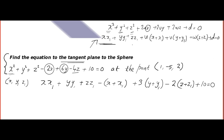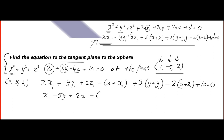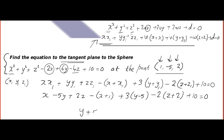Now, what is (x1, y1, z1)? It is (1, −5, 2). So substituting: x·1 + y·(−5) + 2·z − (x + 1) + 3(y − 5) − 2(z + 2) + 10 = 0. You can simplify. The answer comes out to y + 5 = 0. You divide throughout by −2 to simplify. Confirm whether this answer matches your own work.